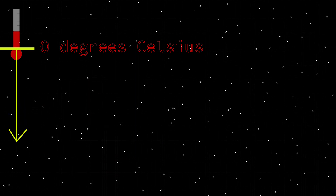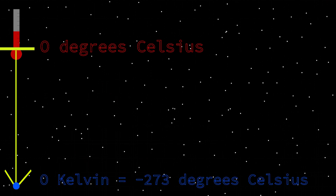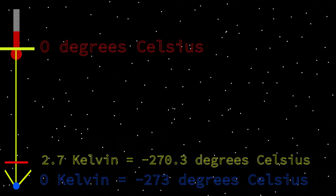In another example, the coldest temperature possible is 0 Kelvin, negative 273 degrees Celsius. The energy of space itself is known as zero-point energy, and the fluctuating bursts of energy prevent the temperature from going down even lower.